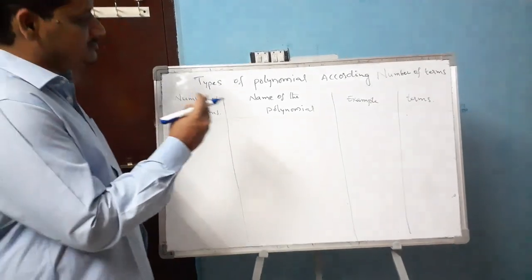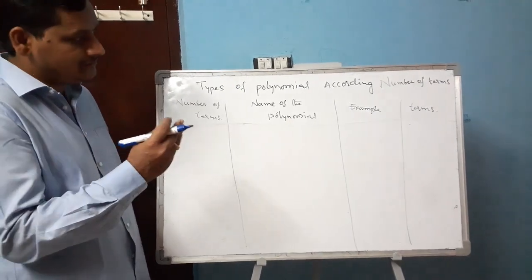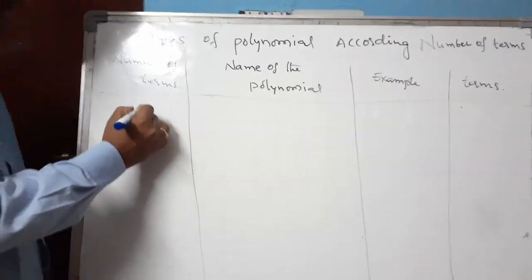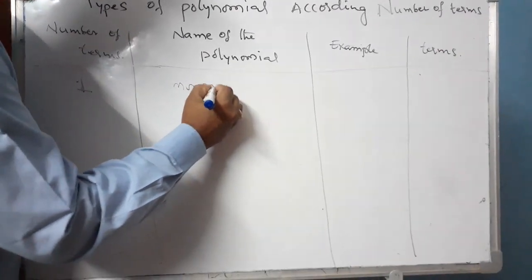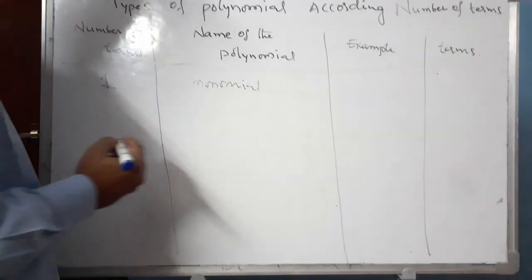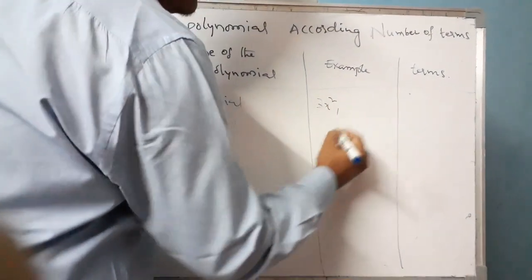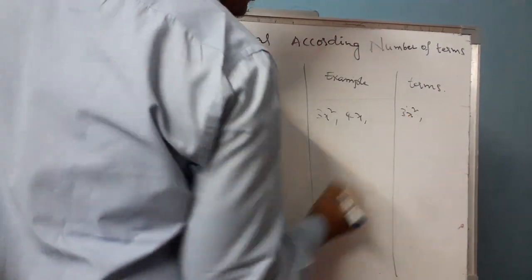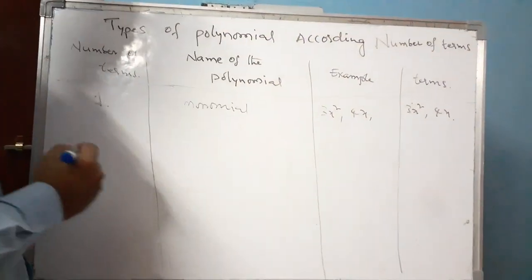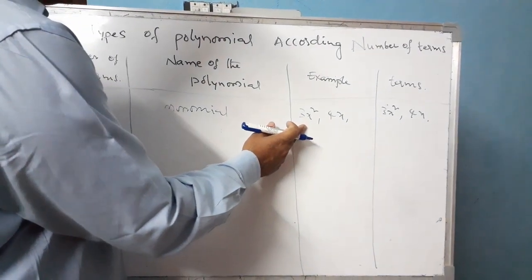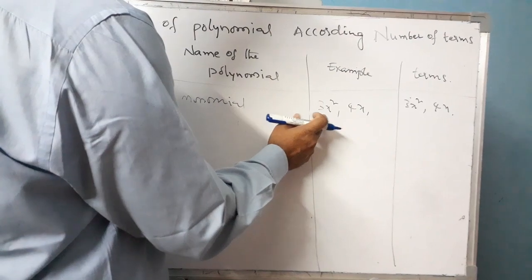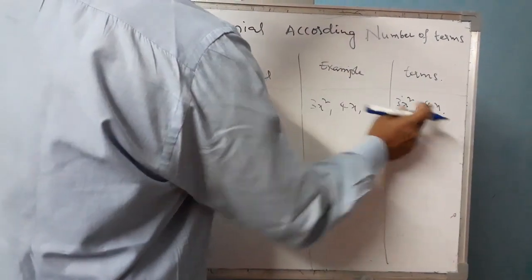Now, the types of polynomial according to the number of terms. If the number of terms is 1, it is called a monomial. Examples: 3x squared and 4x. Here 3x squared has only one term, and 4x also has only one term, so each is a monomial.